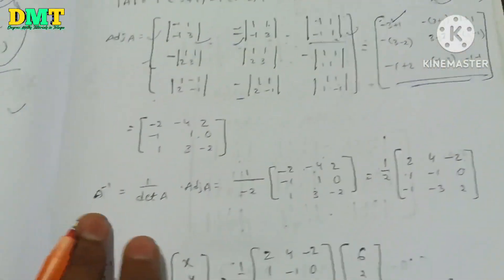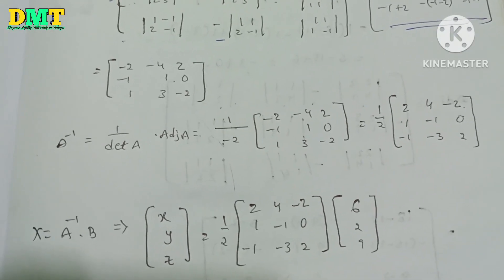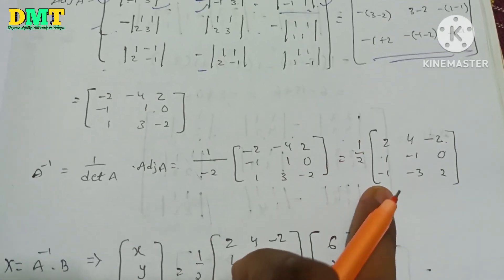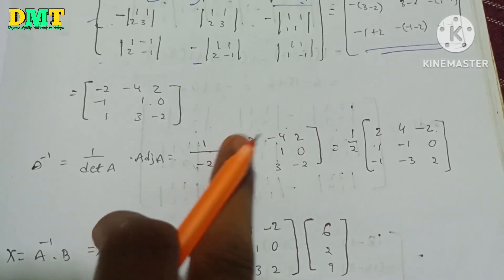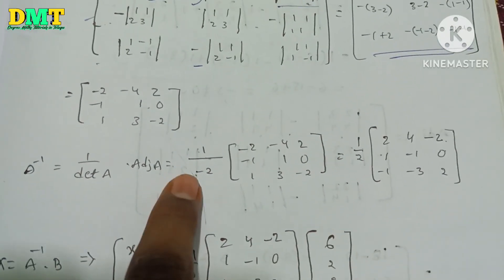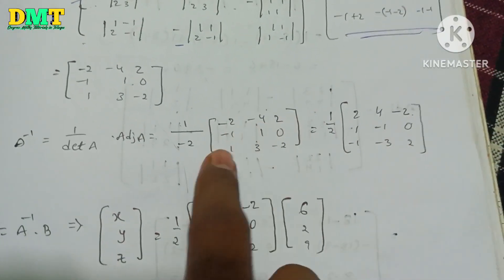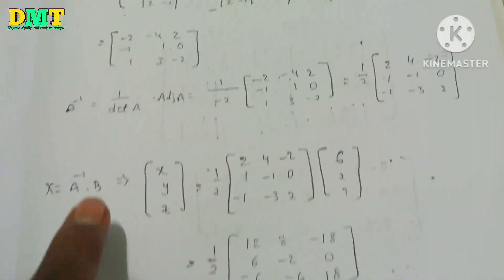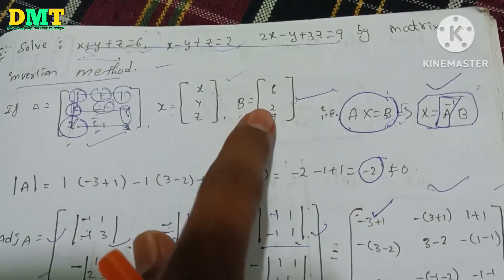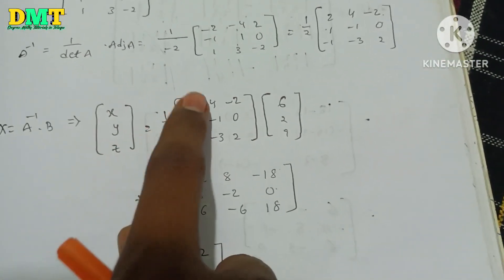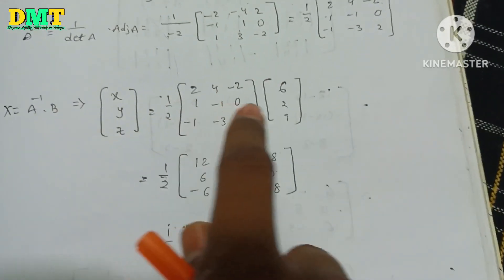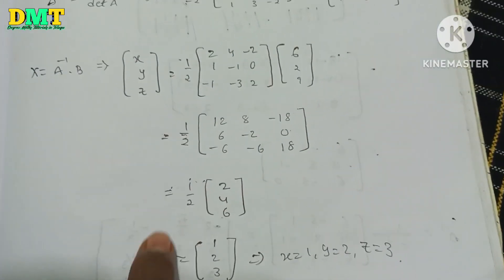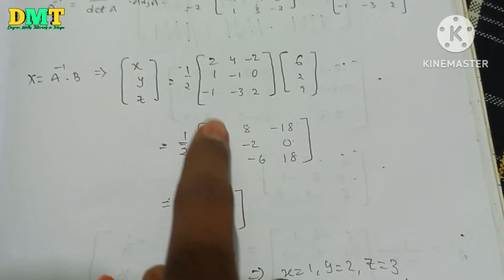We already have the adjoint from the previous class. One by the adjoint — 1 by delta, which is 1 by minus 2. Minus 2 and minus 1 cancel. So A inverse equals 1 by minus 2 times the adjoint matrix. Then A inverse into B. B equals the column vector 6, 2, 9. So 1 by 2 into multiply: 2 times 6 is 12, 4 times 2 is 8, minus 2 times 9 is minus 18. 1 times 6 is 6, minus 1 times 2 is minus 2, 0 times 9 is 0. And minus 6, minus 6, 18.